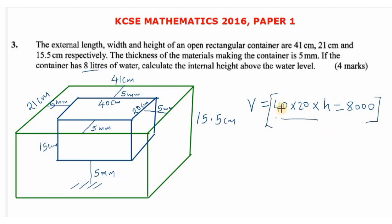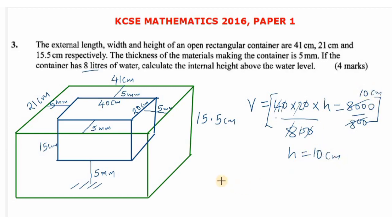Dividing both sides by 800, the height of water becomes 10 centimeters. That is the height of the water inside the container. Since we are interested in the height above the water level, we take the total internal height of 15 centimeters and subtract the water height of 10 centimeters.